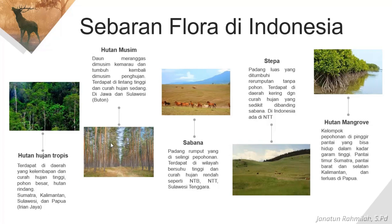Selanjutnya ada sabana atau savana. Sabana ini padang rumput yang diselingi pepohonan. Terdapat di wilayah bersuhu tinggi dan curah hujannya rendah. Biasanya kalau kalian ke daerah NTB, NTT, Sulawesi Tenggara — misalnya ke daerah Sumbawa, di sana ada padang rumput yang luas dengan pepohonan dan banyak digunakan untuk ternak warga. View-nya di padang rumput savana ini sangat bagus.